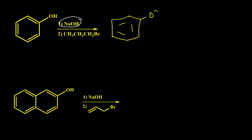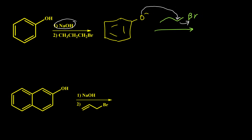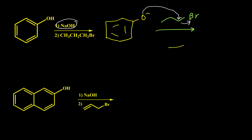Then the phenoxide anion in the second step reacts with bromopropane. The O-negative easily attacks and kicks bromine out of the structure, and our final product is the corresponding aryl alkyl ether.